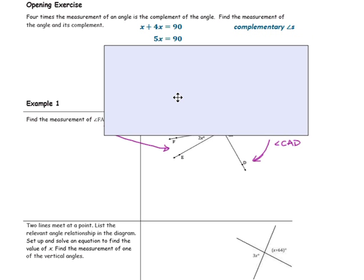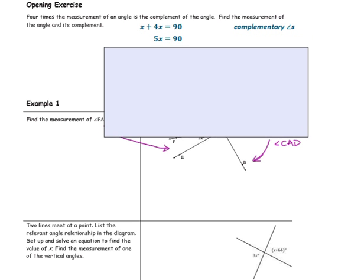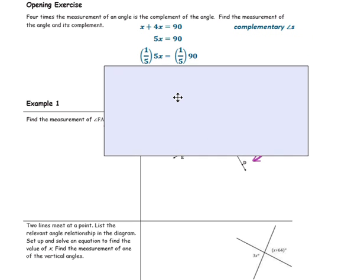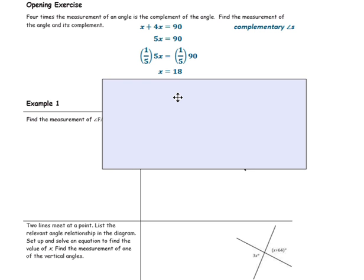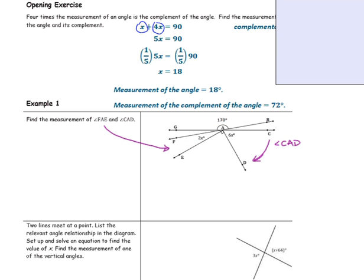Combine your like terms to get 5x. Multiply by the reciprocal of the coefficient to solve your equation. Now that we know that the small angle is 18 degrees, we can find the measure of the other angle. The first angle is 18 degrees, and the second angle is 4 times 18 degrees. So we have the measure of both angles: 18 degrees and 72 degrees.